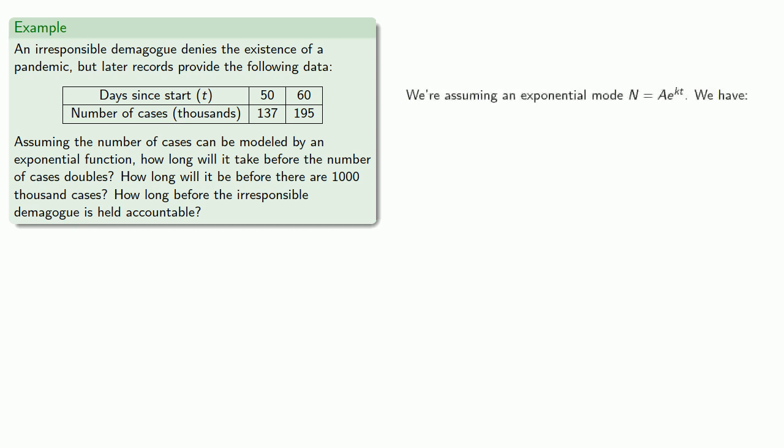So again, we're assuming an exponential model, and we have at 50 days, 137,000 cases, and at 60 days, 195,000 cases. We can substitute those into our function. We have two equations with two unknowns, and there are several ways to solve this system.